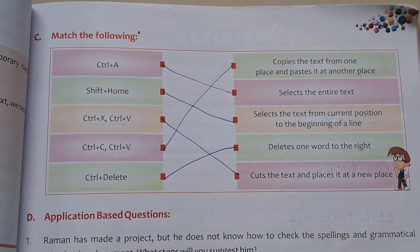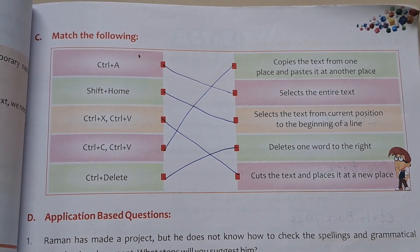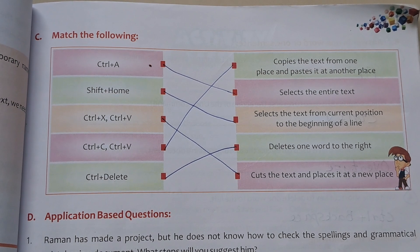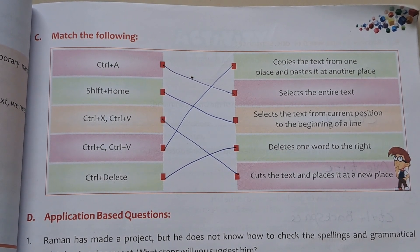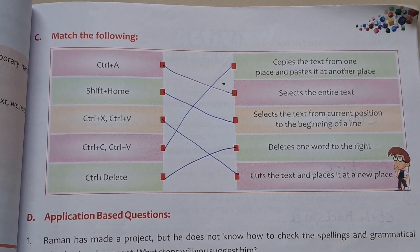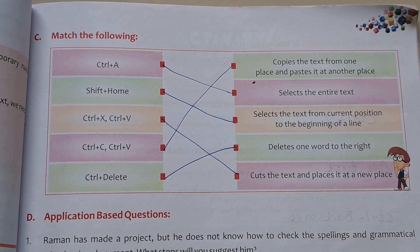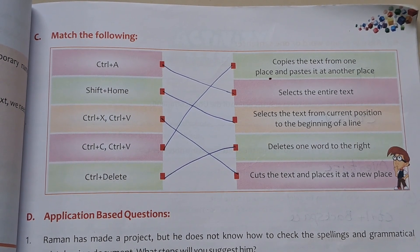Ctrl C, Ctrl V — Copies the text from one place and pastes it to another place. Ctrl plus Delete — Deletes one word to the right.